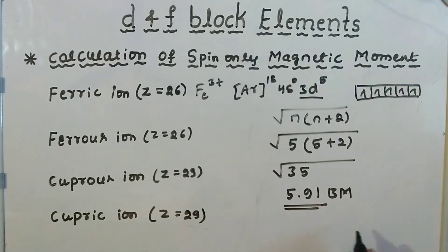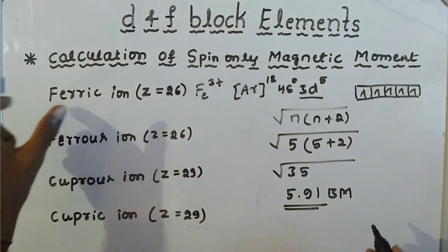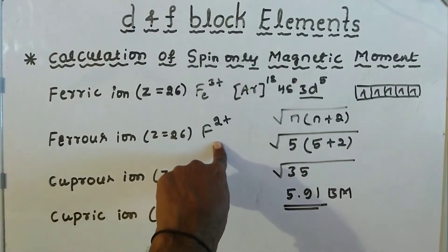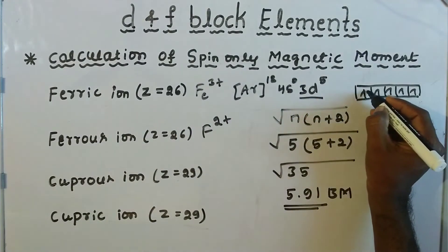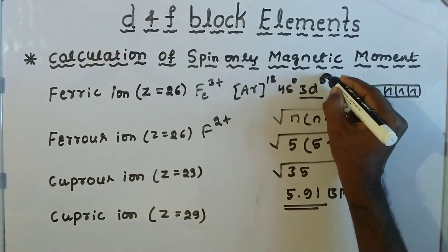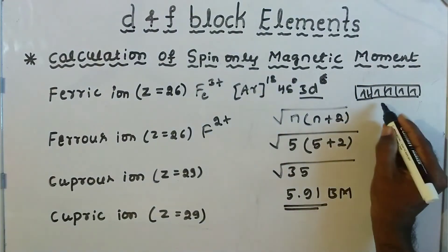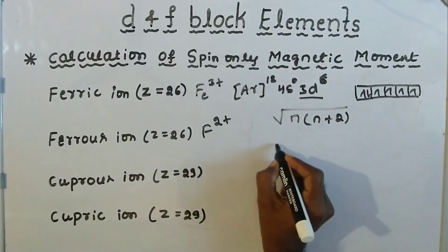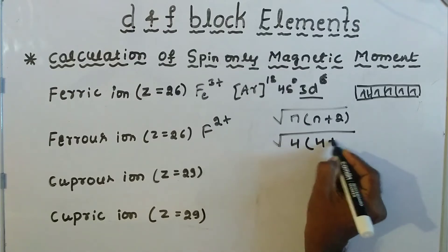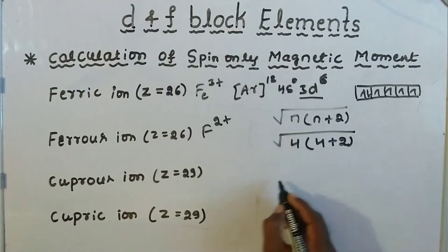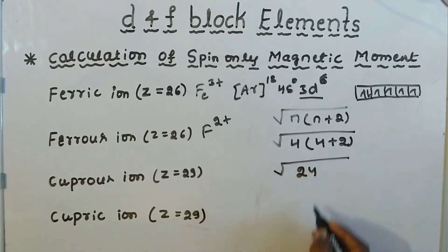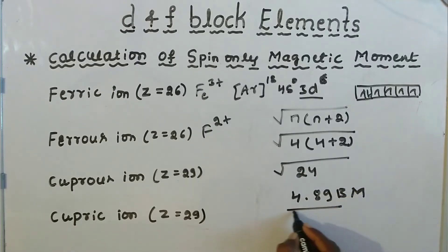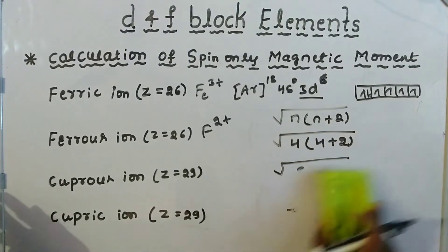Next example is the ferrous ion: Fe²⁺. For Fe²⁺ we remove two electrons. The configuration gives us 3d⁶, and counting the unpaired electrons we get four unpaired electrons. Substituting n = 4: μ = √(4 × (4+2)) = √(4 × 6) = √24 ≈ 4.89 Bohr magnetons.